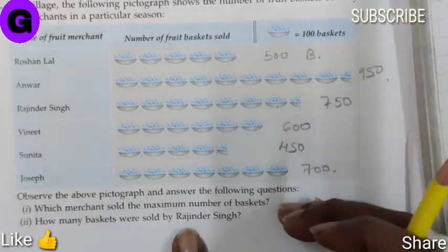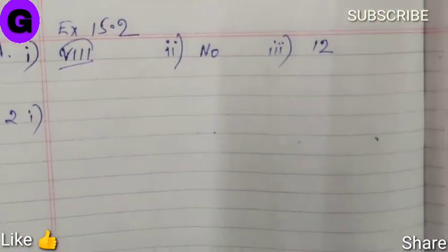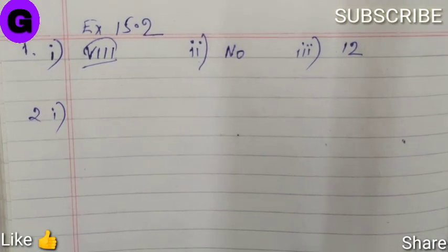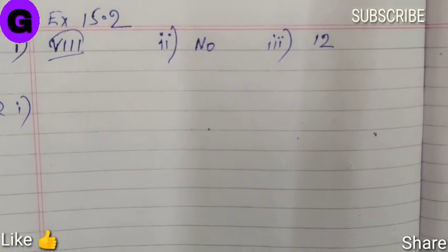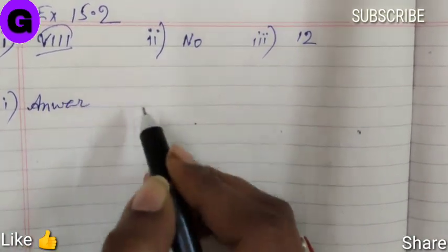Now based on this information we'll solve the questions. The first question is: Which merchant sold the maximum number of baskets? As we can see, the highest is 950 which comes from Anwar. So the answer is Anwar.